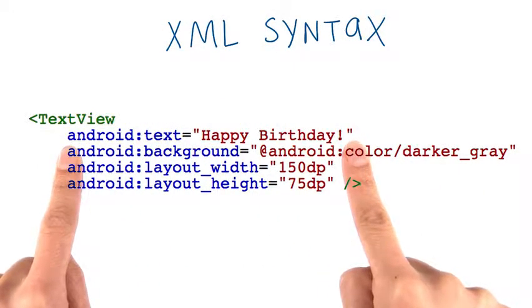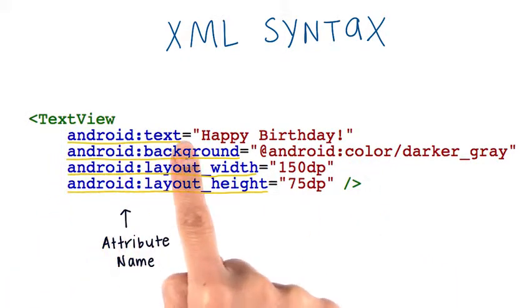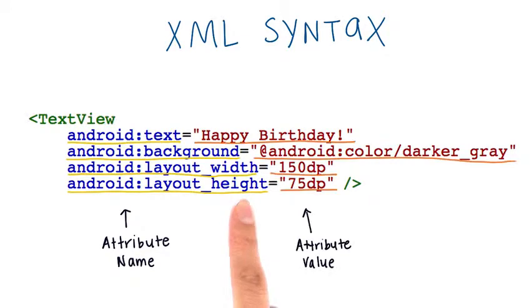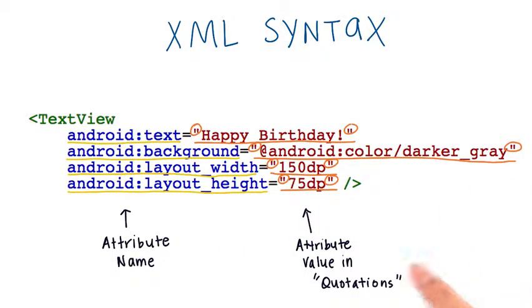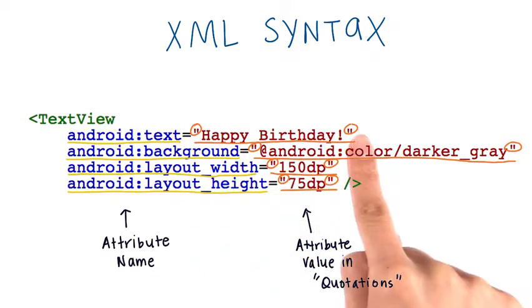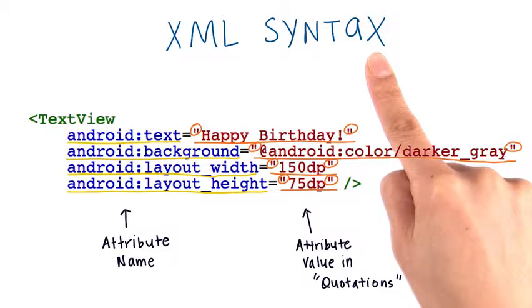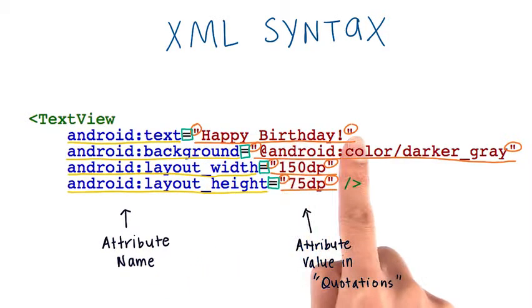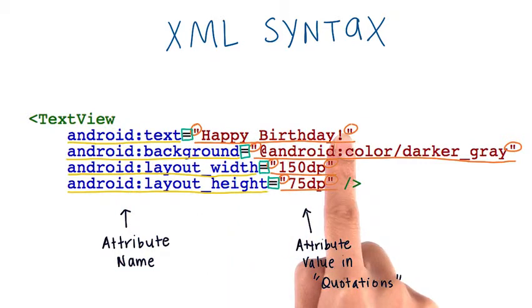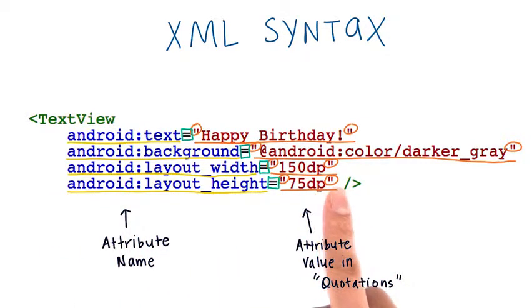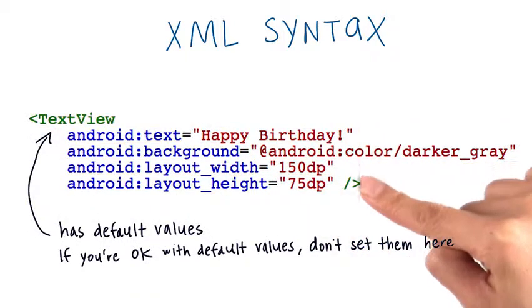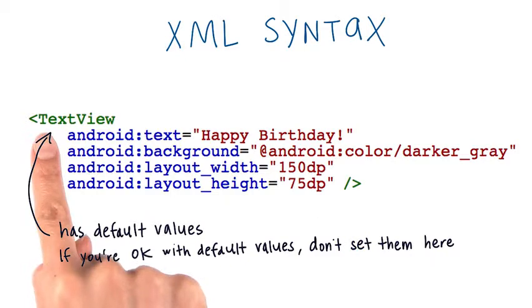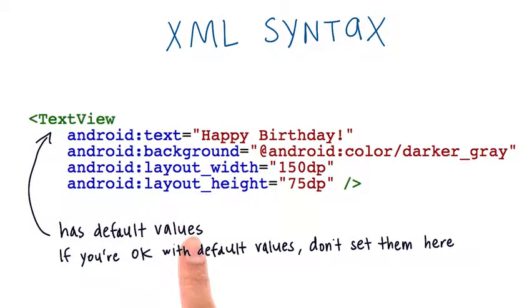Looking more closely at the format of each line, we have the attribute name on the left-hand side, underlined in yellow here. And on the right-hand side, we have the actual value. It's important to note that the attribute values should be put in quotation marks as part of the XML syntax. Then we have an equal sign in the middle to say that the attribute name on the left is set to the value on the right. So the text for the TextView is "happy birthday," and the height is 75 density-independent pixels. All of these attributes have default values, and there are attributes we didn't even list here — if you're okay with the default values, you don't need to set them.